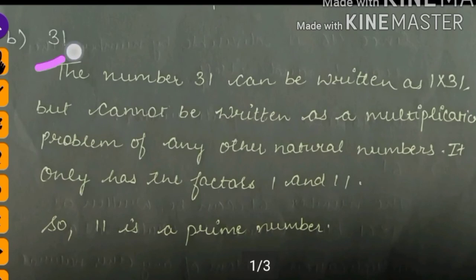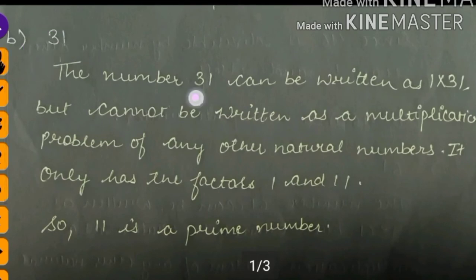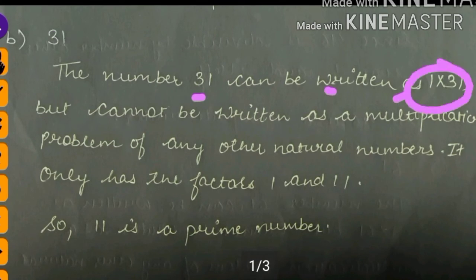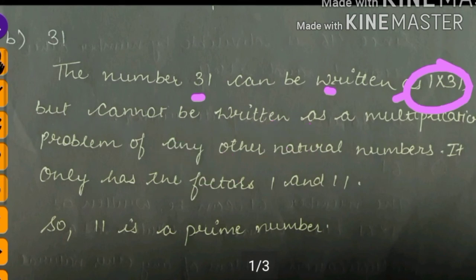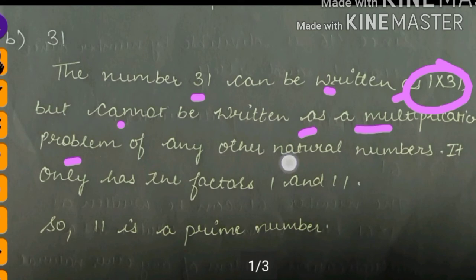Next part: 31. The number 31 can be written as 1 into 31 or 31 into 1, but cannot be written as a multiplication of any other natural numbers.